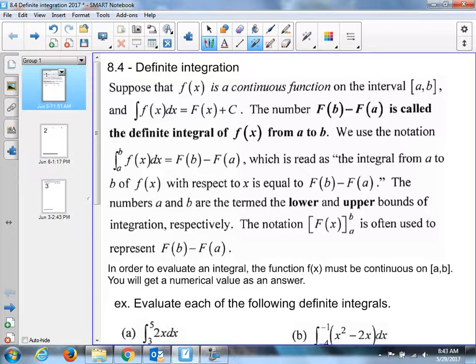The numbers a and b are termed the lower and upper bounds of the integration, respectively. The notation here, square bracket around your answer for the anti-derivative, the opposite, from a to b, is often used to represent this subtraction idea. We'll use it. Reading this, in order to evaluate an integral, the function f of x must be continuous, no breaks, and you'll get a numerical value as an answer.